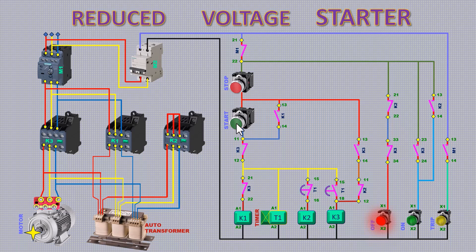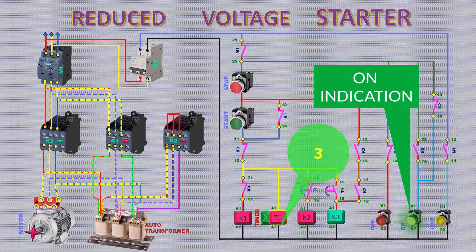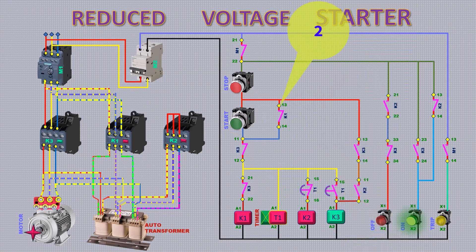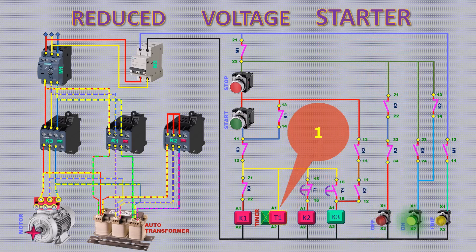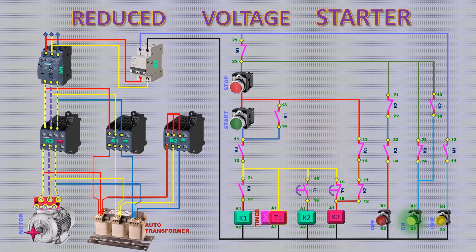Now start the motor by pressing start button. In this animation, you can see, K1 and K2 contactor picked and 60% power is passing through auto transformer.